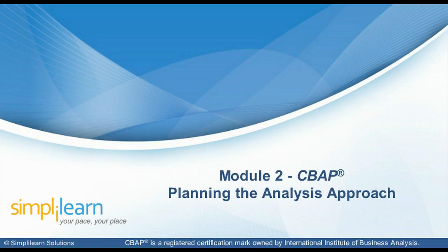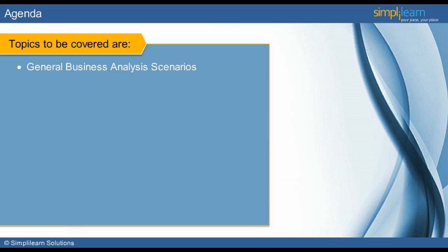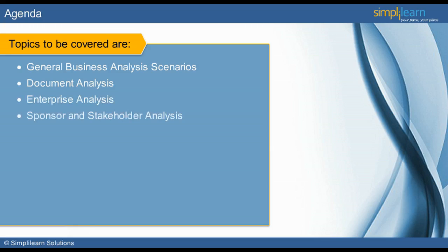Let us begin by looking into the agenda of this module. This slide provides an overview of what will be covered. The topics dealt with are a part of the normal document and action plan preparations for the pre-elicitation process. We will be discussing the two general types of business analysis scenarios, then document analysis which the BA needs to review prior to elicitation, a review of the enterprise analysis, followed by an analysis of the sponsor and stakeholders, defining of roles and responsibilities, and the pre-elicitation action planning.